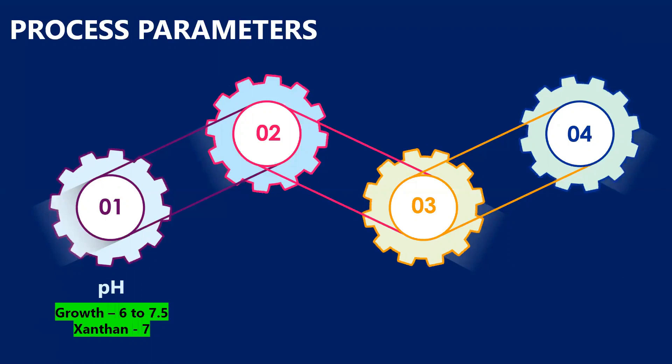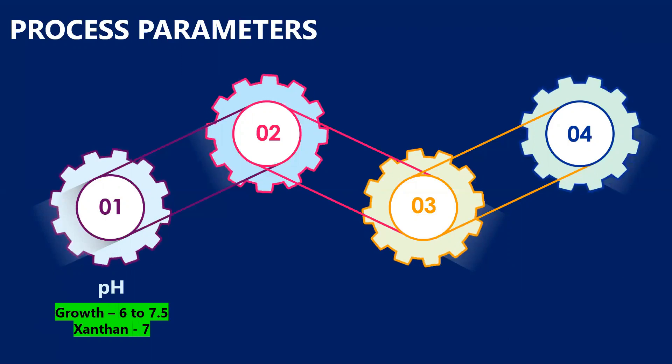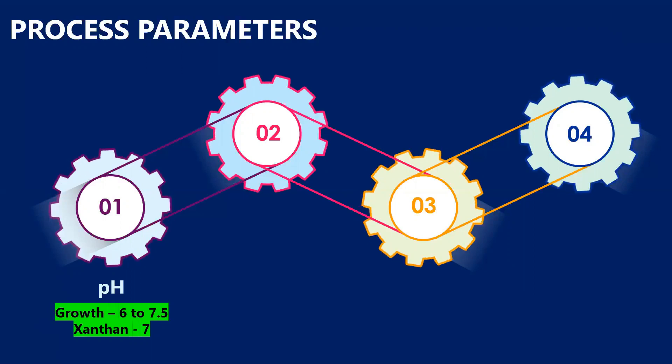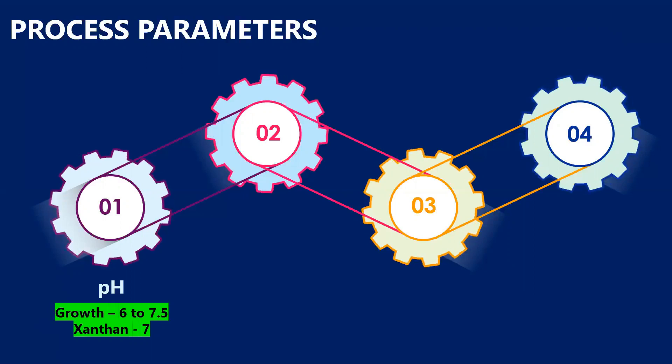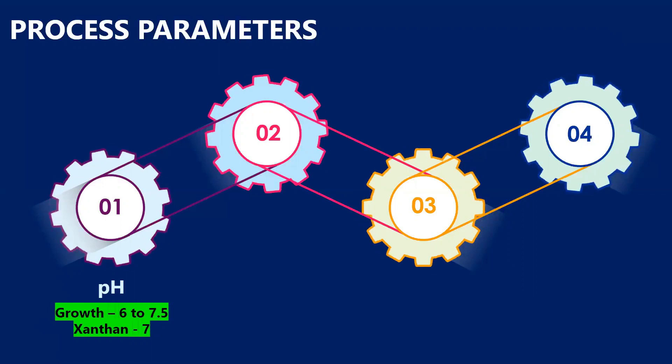During the production phase, certain organic acids are synthesized due to which the pH of the medium drops below 5, and if this happens there will be no production of xanthan. Thus careful monitoring and addition of anti-foam agents is very essential, and we have to monitor this pH.